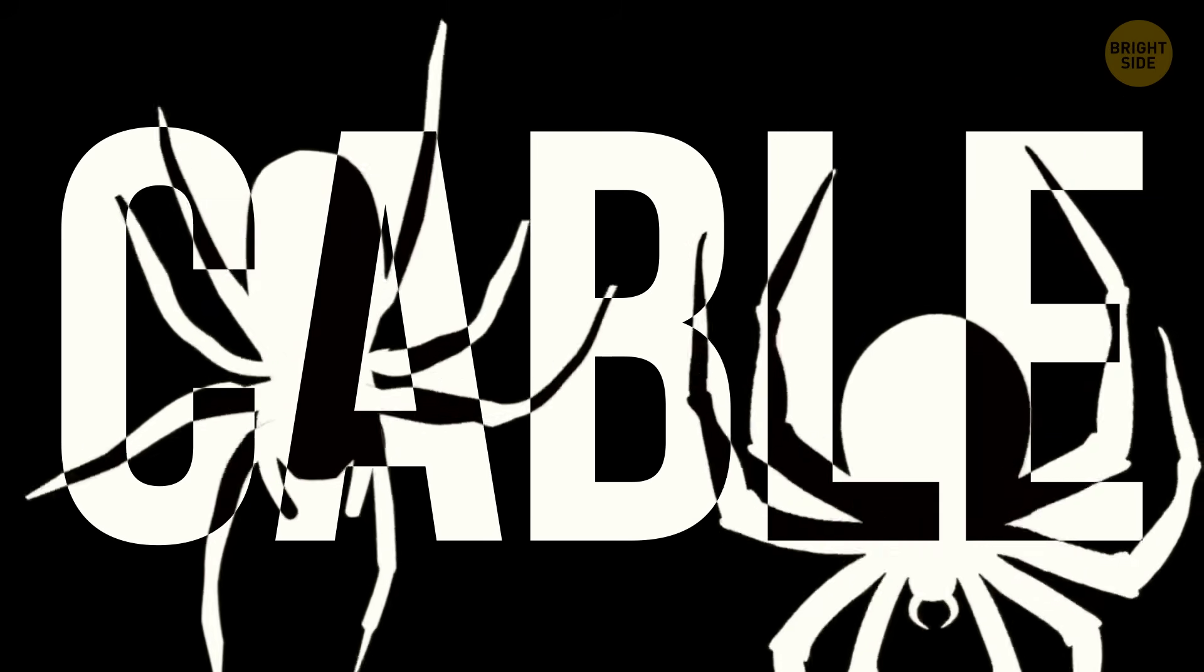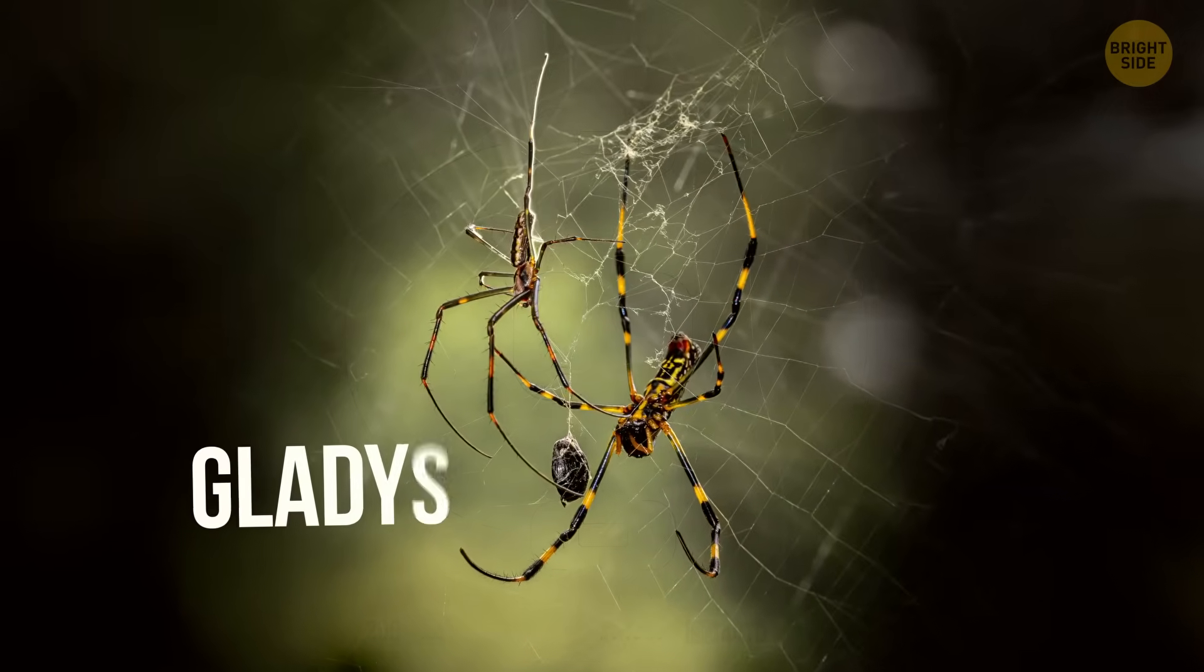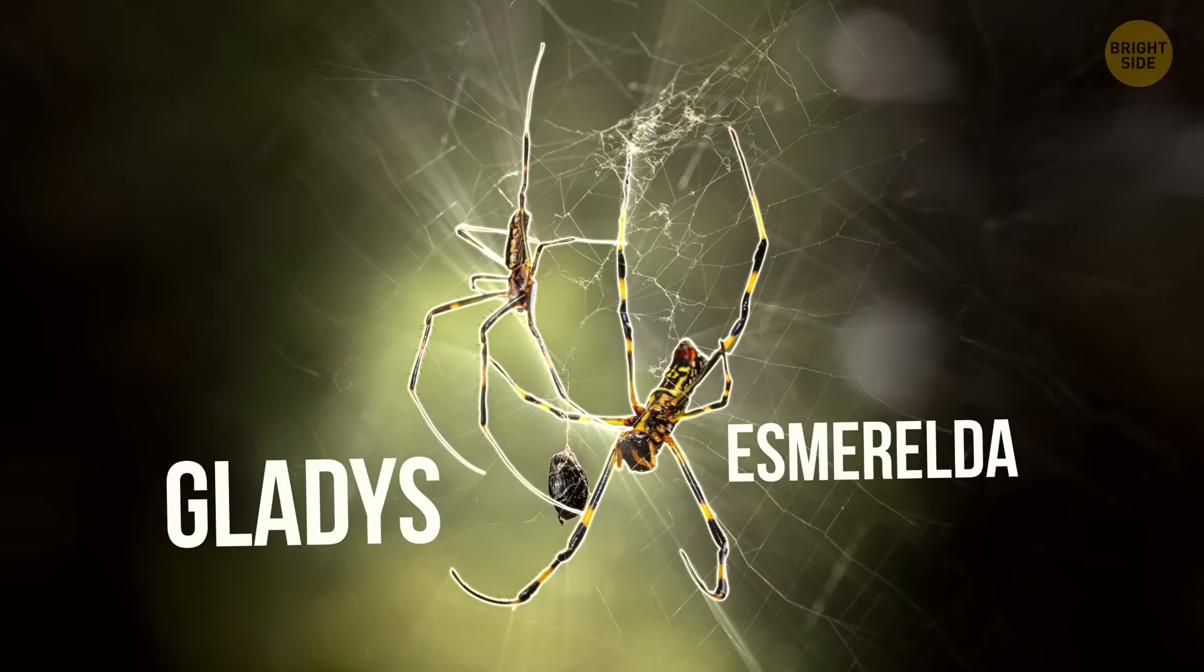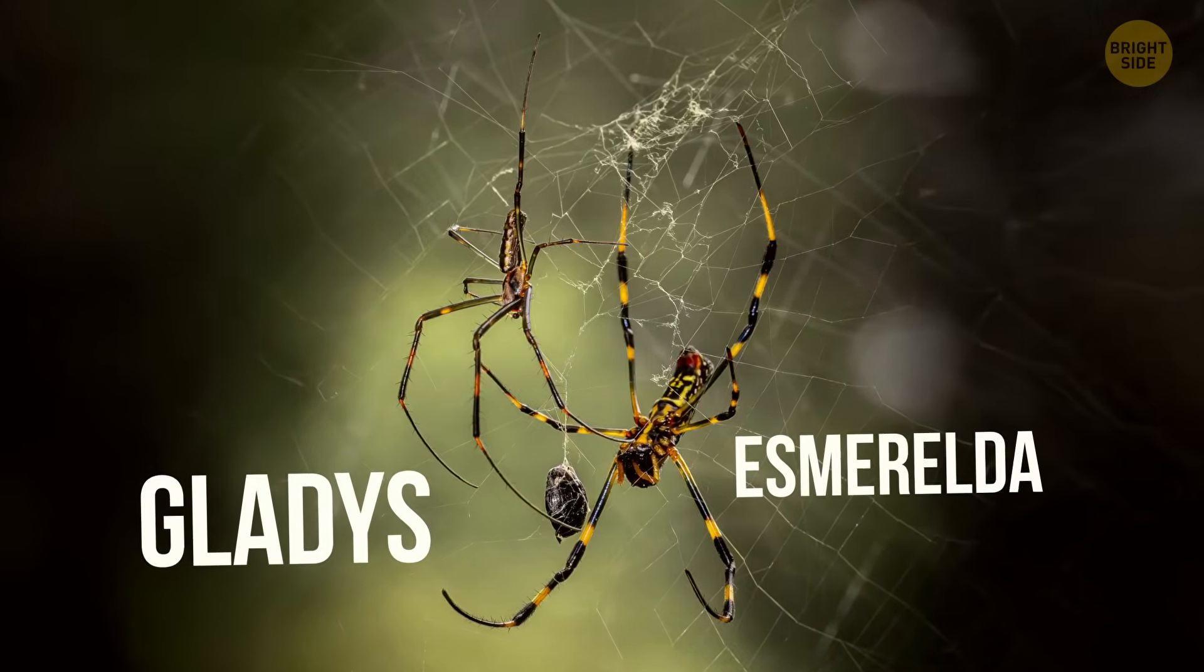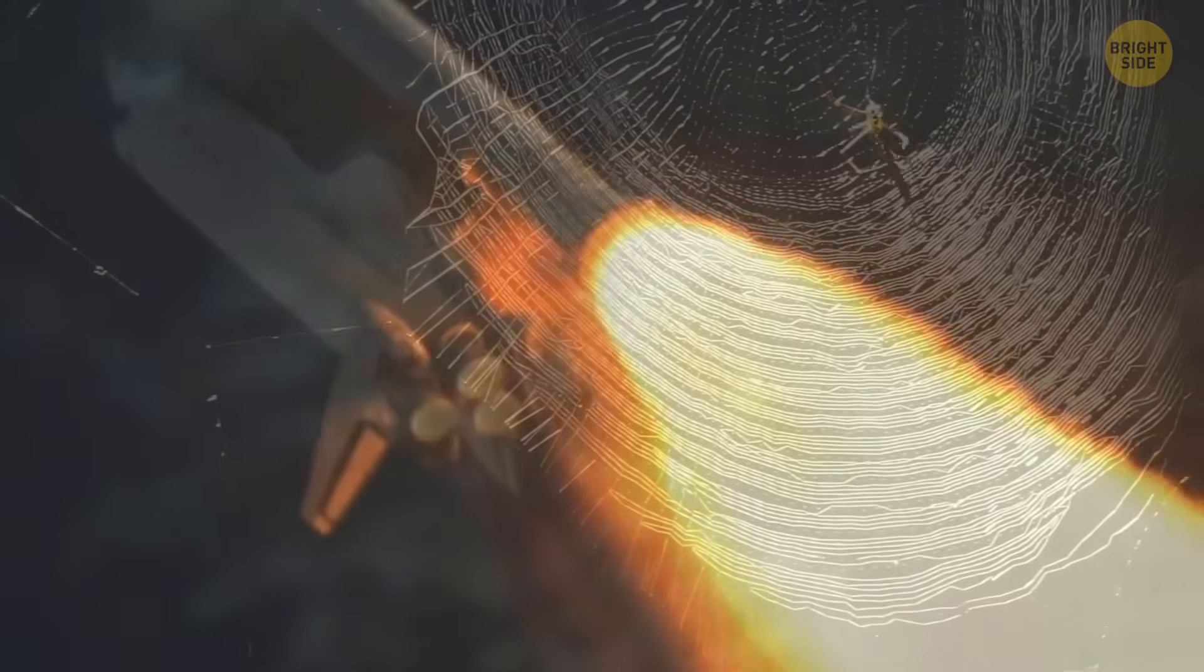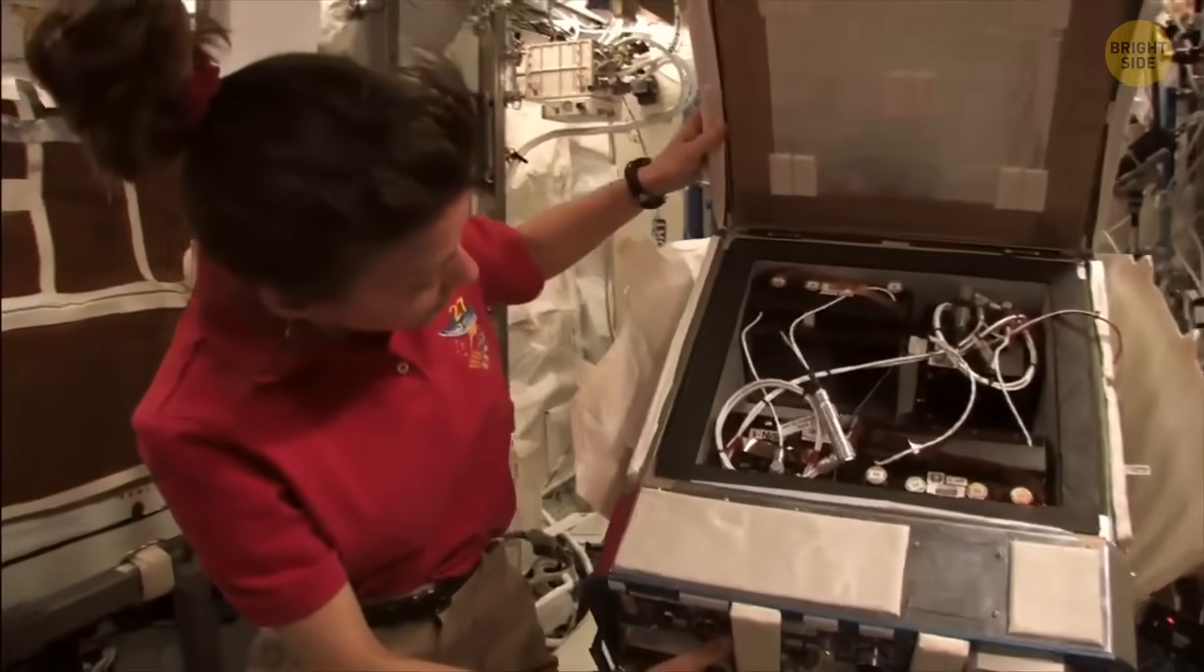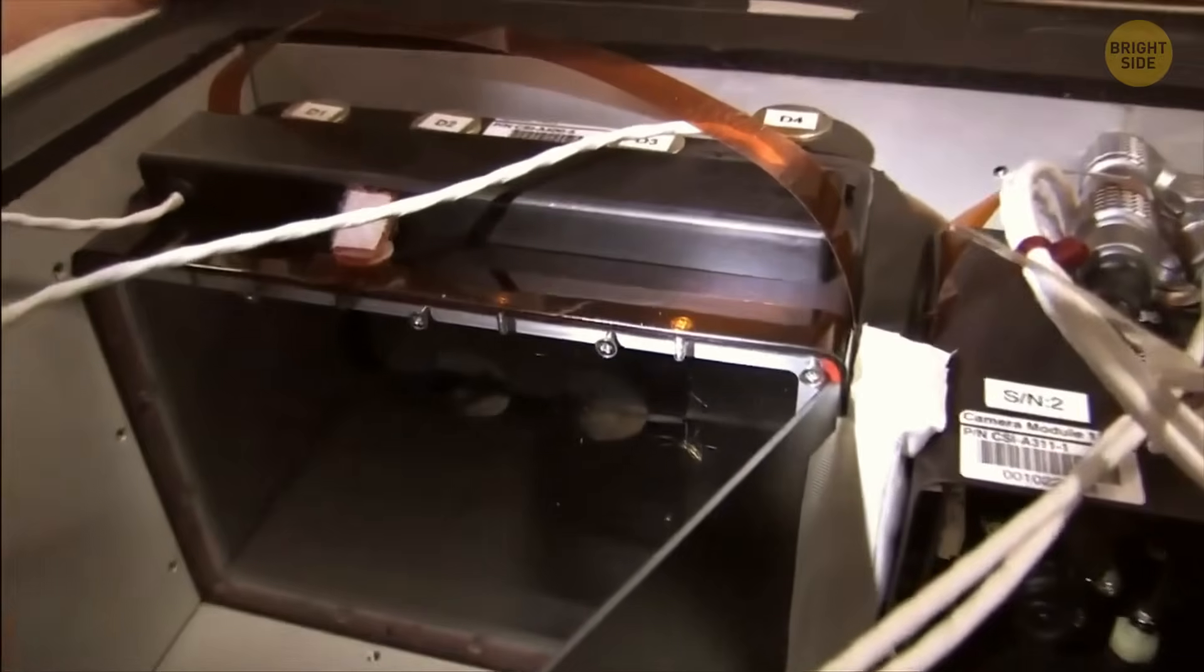If a satellite on a cable isn't wild enough for you, how about two golden orb weaver spiders on the International Space Station? In 2011, NASA sent these two cuties, called Gladys and Esmeralda, up there on Shuttle Endeavour just to see, can spiders spin webs in microgravity? Turns out, yes. The experiment lasted 45 days. While floating in orbit, the spiders went ahead and spun webs.